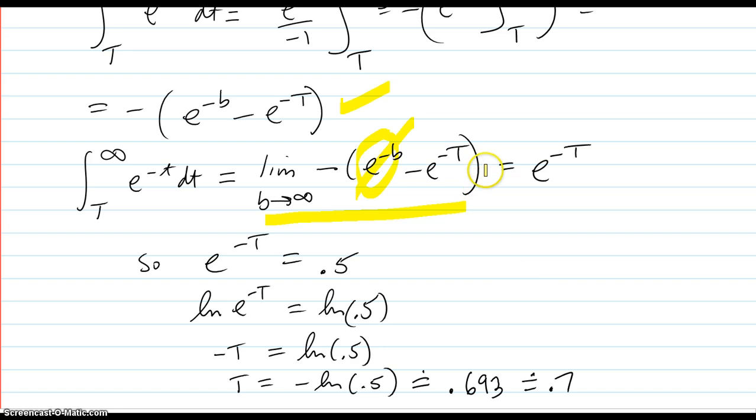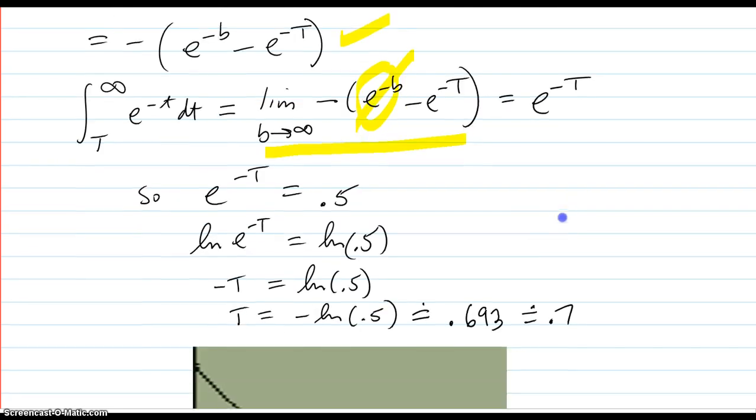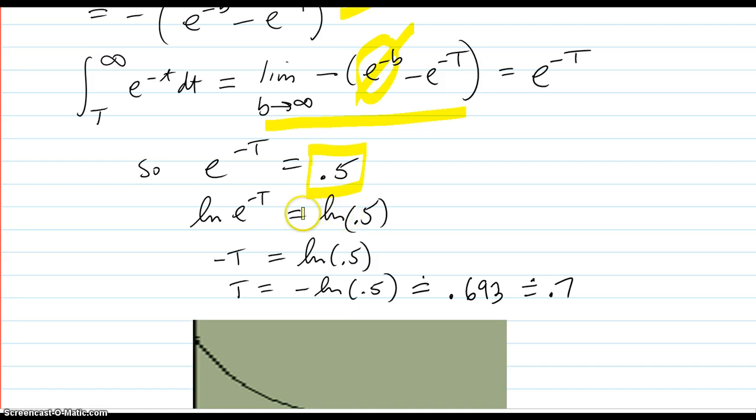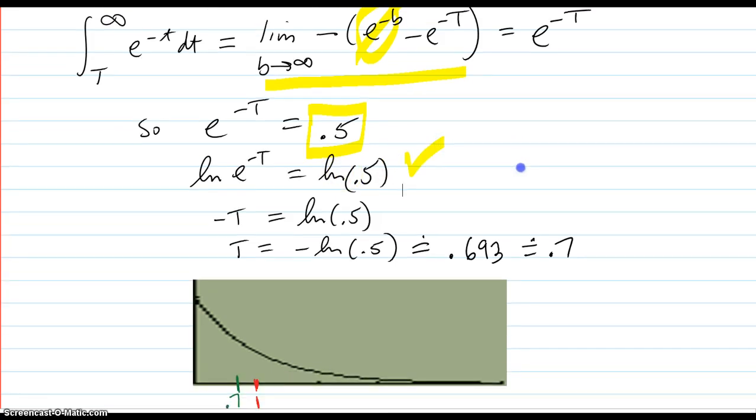And if I want t to be the median, I better have that integral turning out to be 50%, 0.5. So then I take the log of both sides, multiply both sides by negative 1, and get t as 0.693, approximately 0.7.